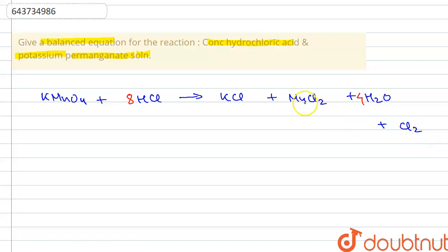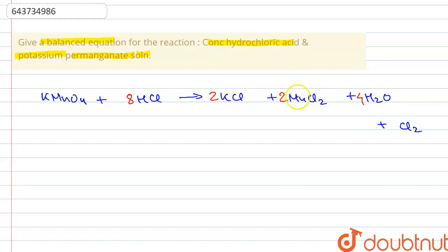We multiply KCl by two, giving six chlorine atoms on the product side, and then multiply again by two. But manganese has now increased to two on the product side, so we multiply KMnO4 by two on the reactant side to equate manganese and potassium atoms.